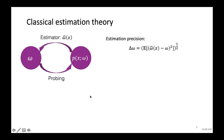Before talking about quantum metrology, I'll first discuss classical estimation theory. We focus on single-parameter estimation. Suppose we have some parameter ω we want to sense, encoded in some probability distribution p(x|ω), where x is a measurement result. We use an estimator ω-hat, a function from x to ω, and care about the estimation precision defined by the variance of ω-hat.